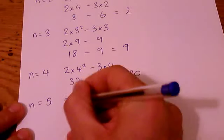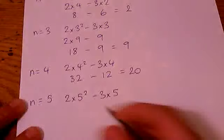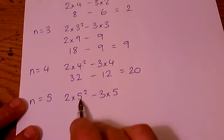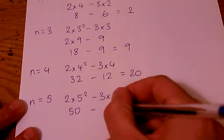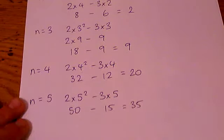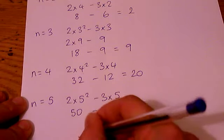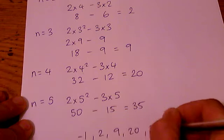And for n equals 5 you're going to get 2 times 5 squared minus 3 times 5. Well, 5 squared is 25, 2 of those is 50 minus 15 makes 35. Let's just check that I've got those numbers correct so my numbers were minus 1, 2, 9, 20, 35.